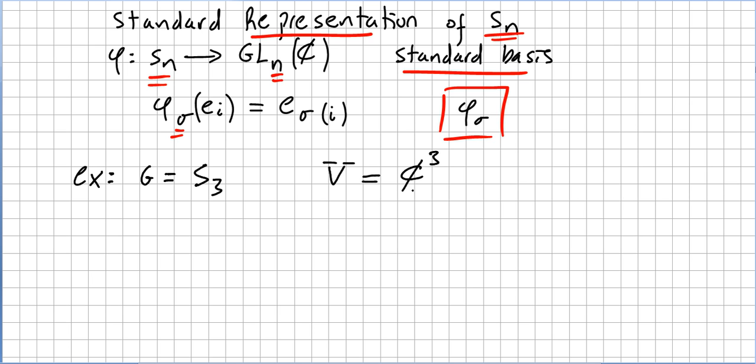We have a representation and a vector group. Now we need a representation, let's call it π1, and we're going to apply the elements of S3 in the matrices, in this case dimension 3 by 3.